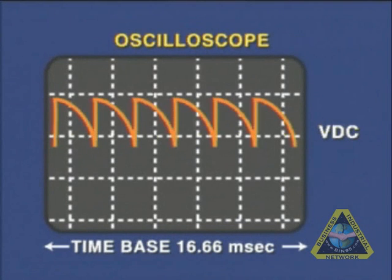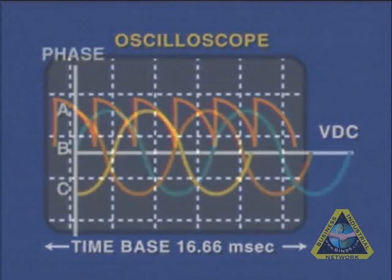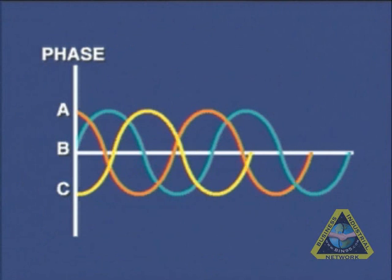You should observe this type of curve, where all six SCR curves should be present within a 16.66 millisecond range which equates to one pulse for each SCR on each half cycle of the three phases. Make sure the scope is set for at least a 16.66 millisecond scale.